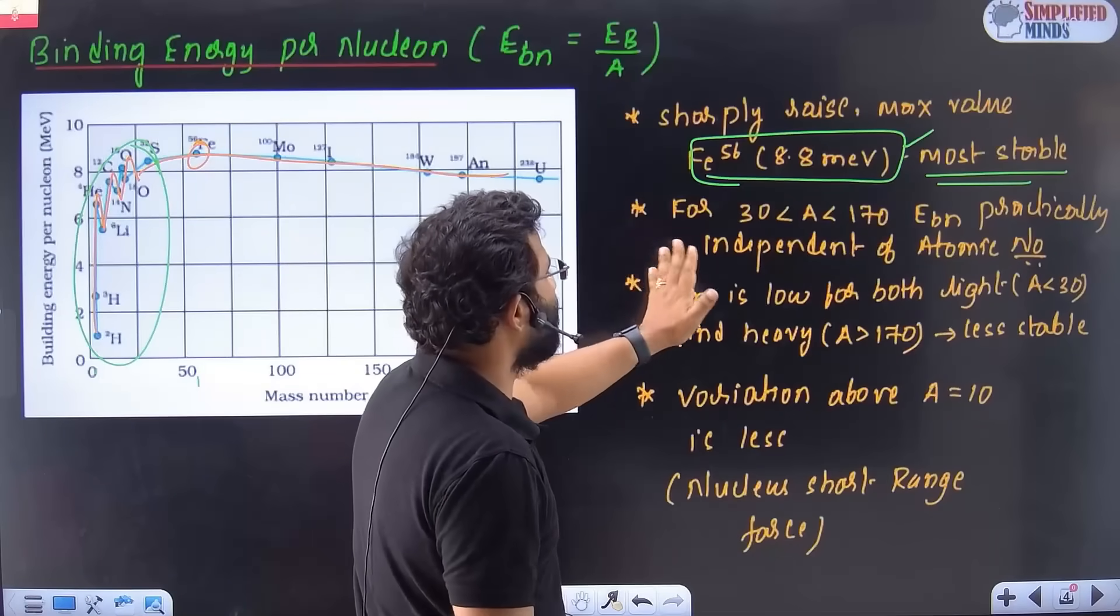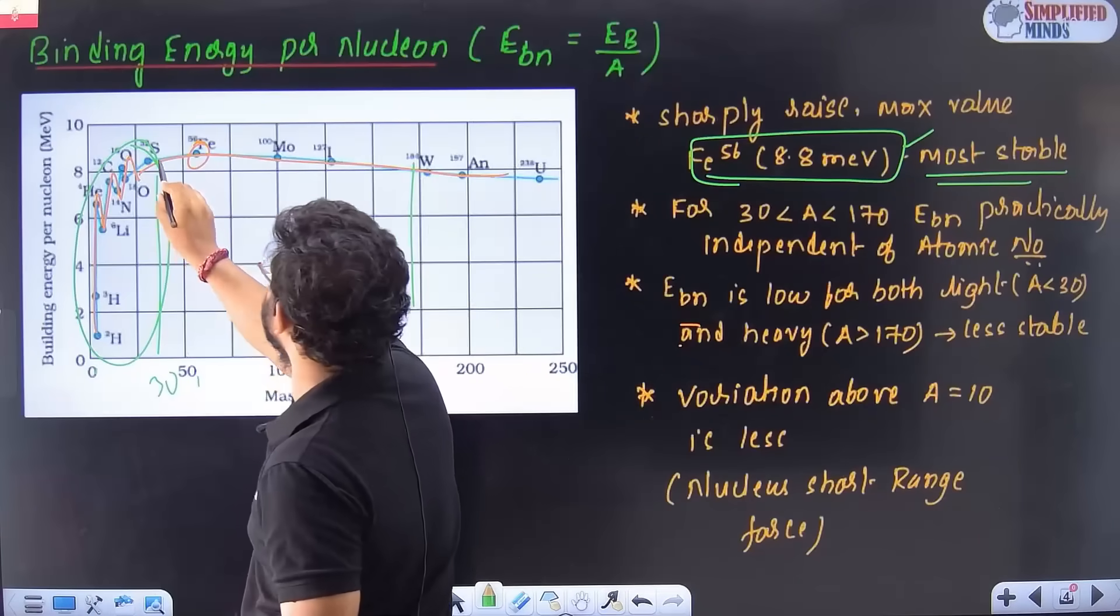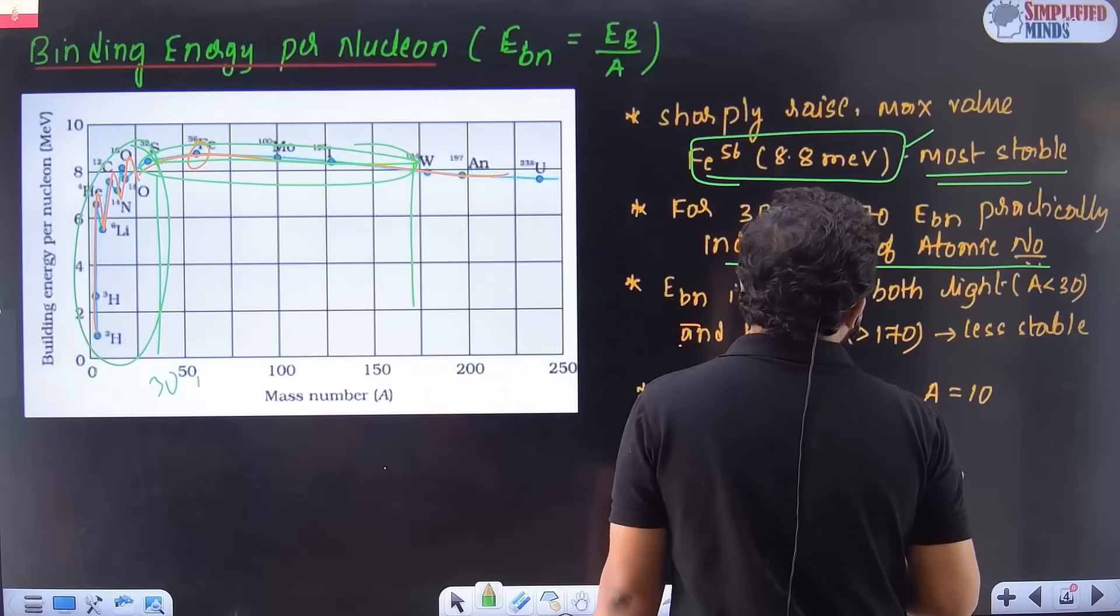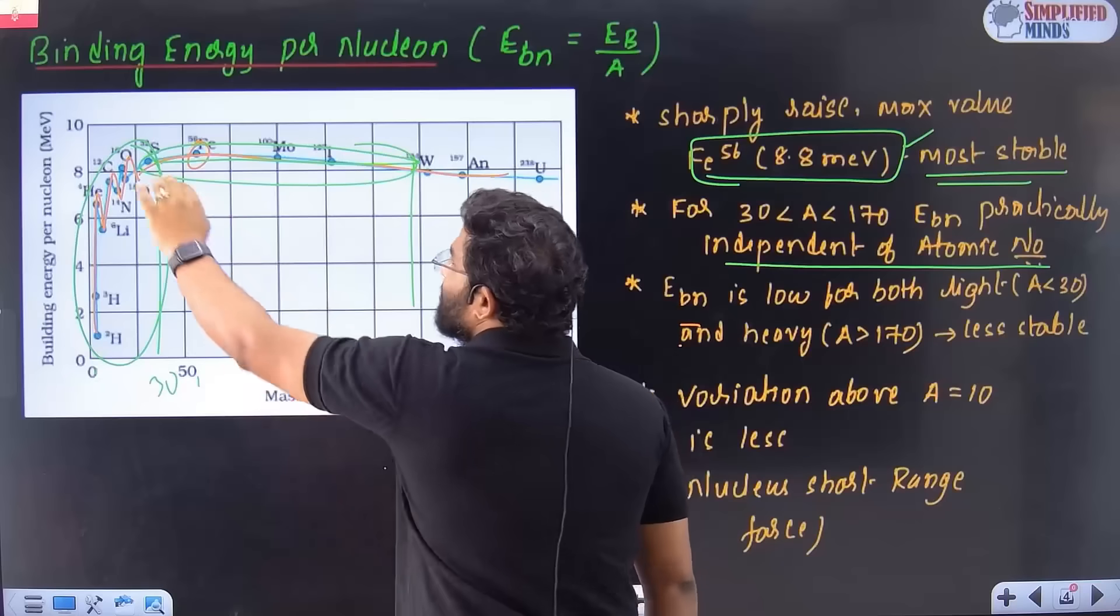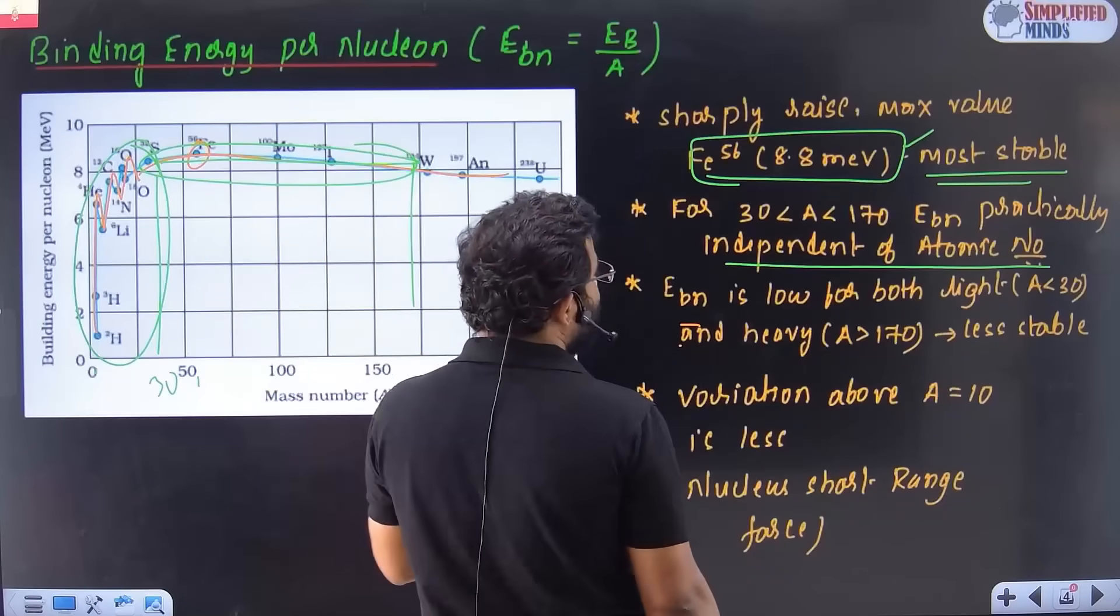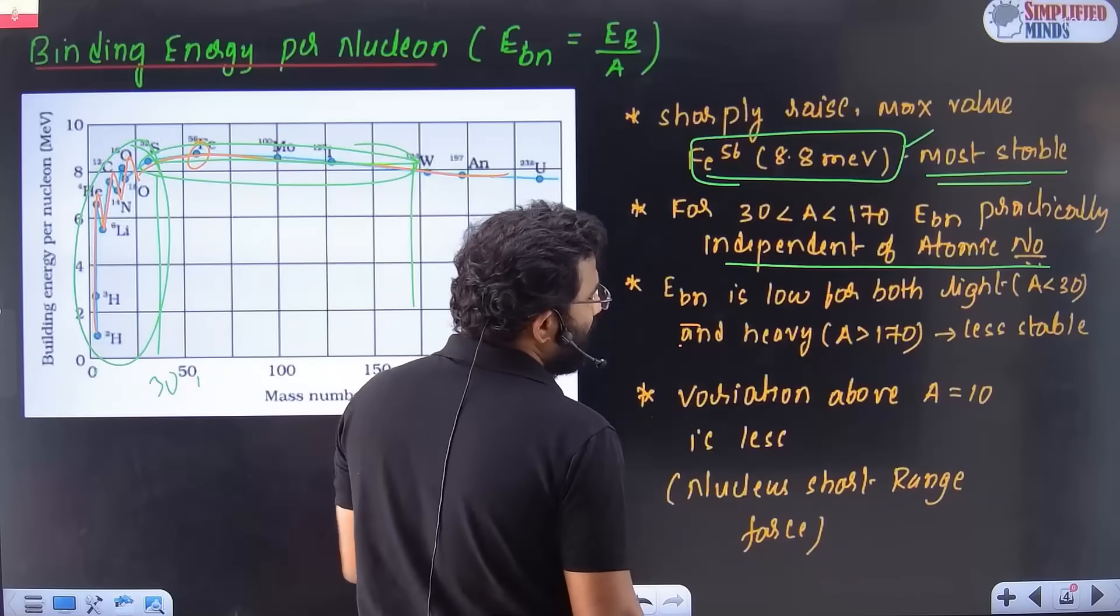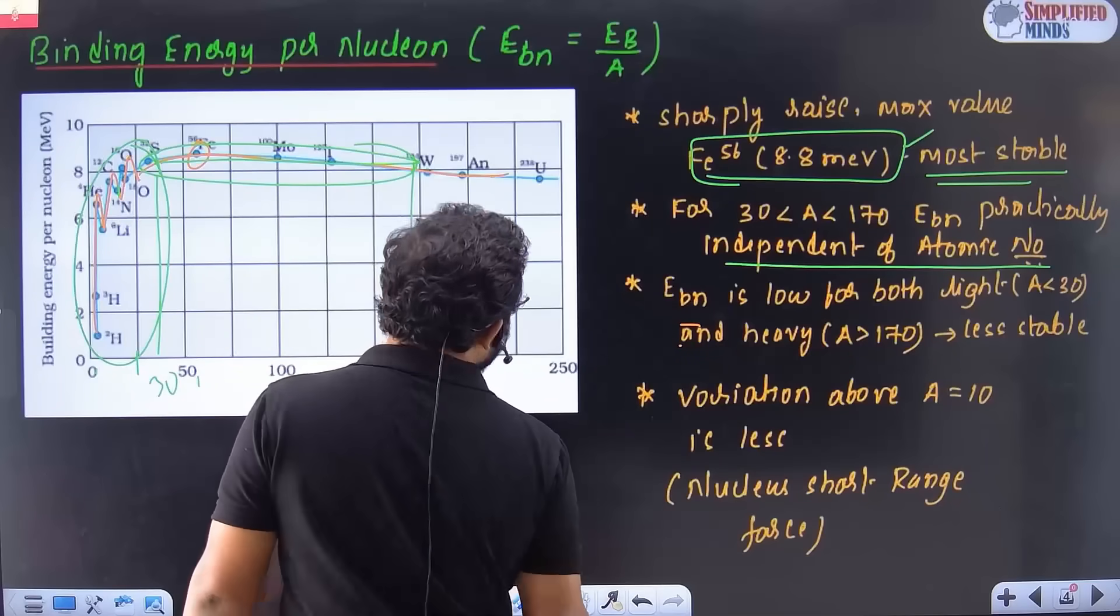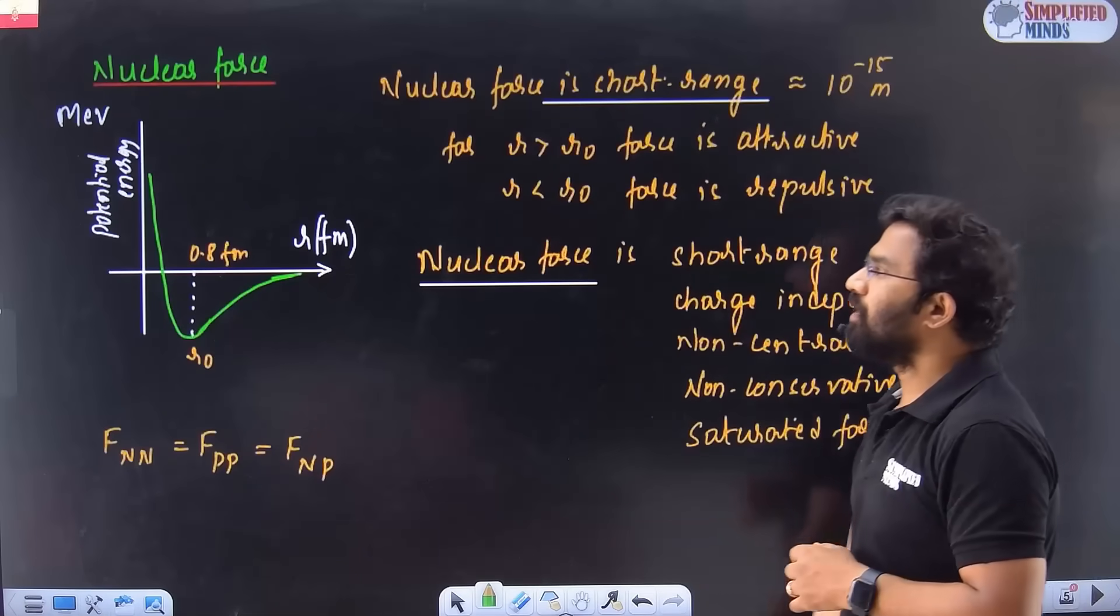And they may ask you to write features basically. You can see clearly, sharply increases initially. It attains maximum at iron, Fe-56 at maximum. So this is the most stable. Next, if you take the values from somewhere 30 to 170, you don't see much change. From 30 to 170, you can see almost it's independent of atomic mass. Because almost it's remaining constant. And then mass number changes, EBN doesn't change much. That's the meaning of that. And EBN is low for both lighter nuclei and heavier nuclei. That's why they are not stable. And variation above 10 is very less.